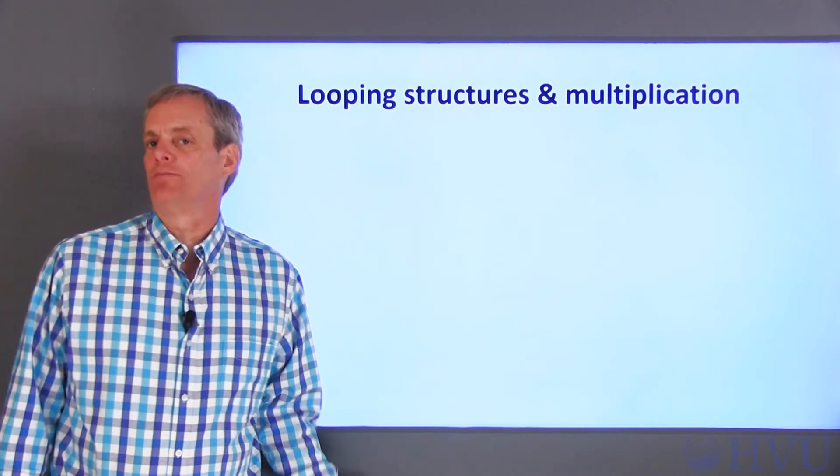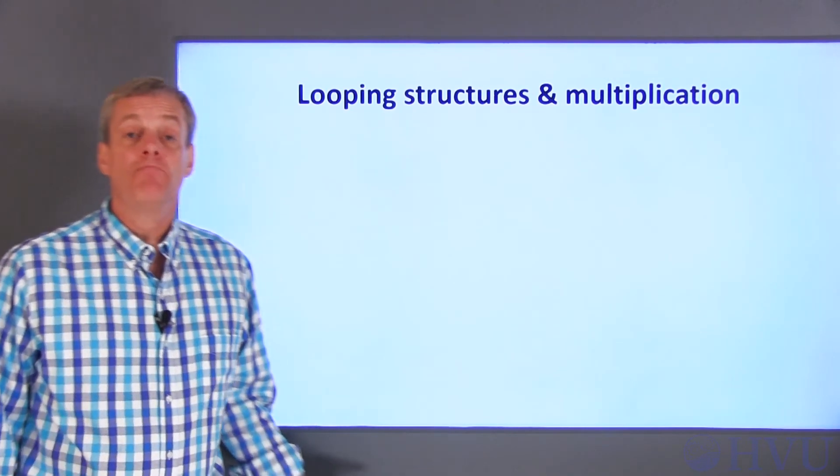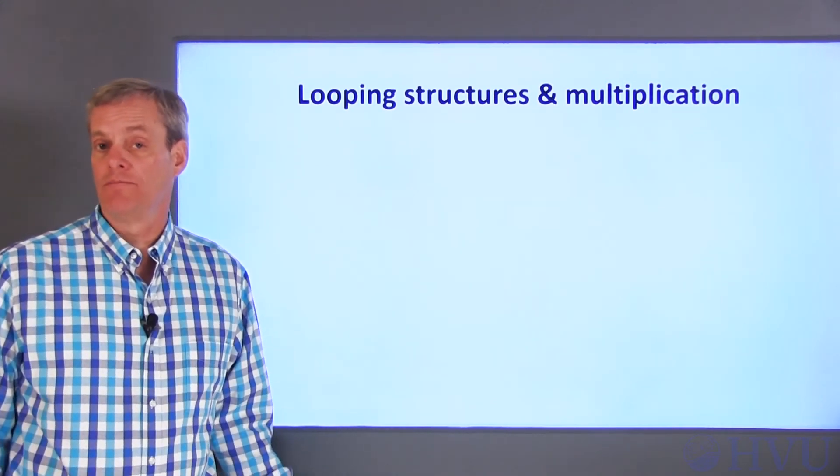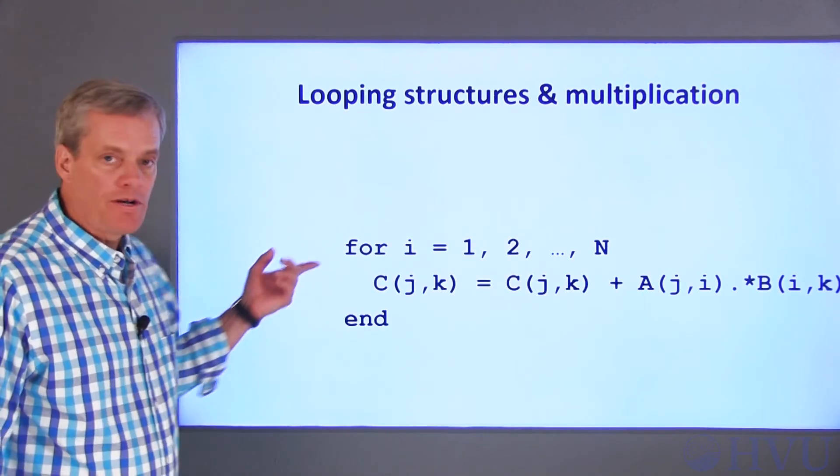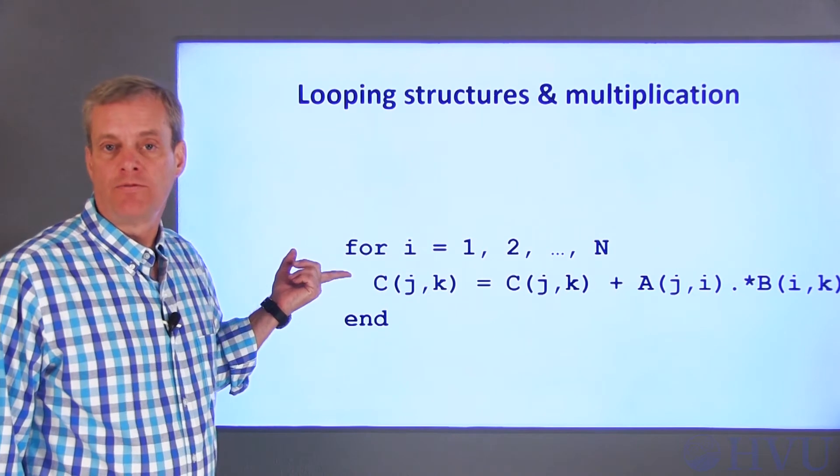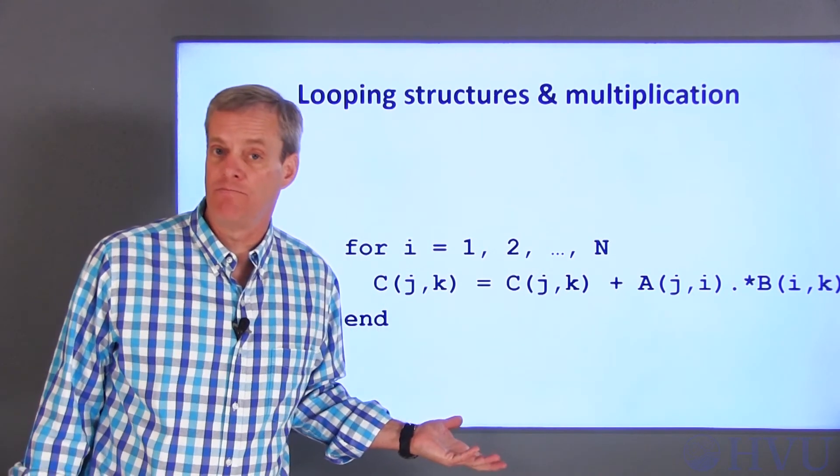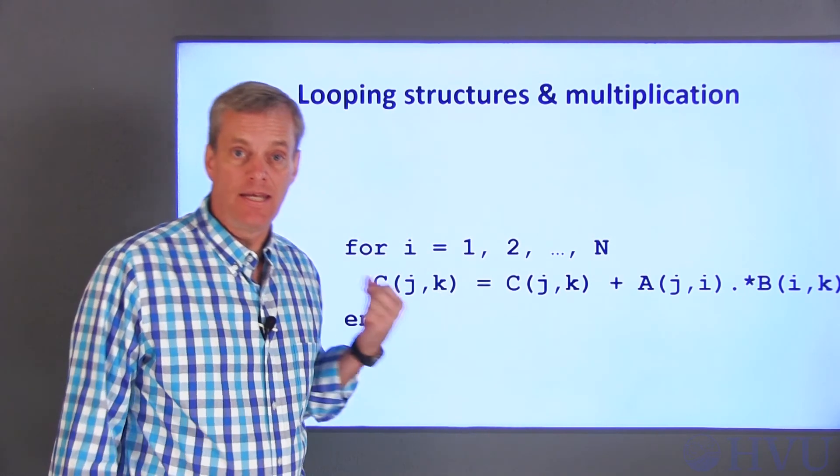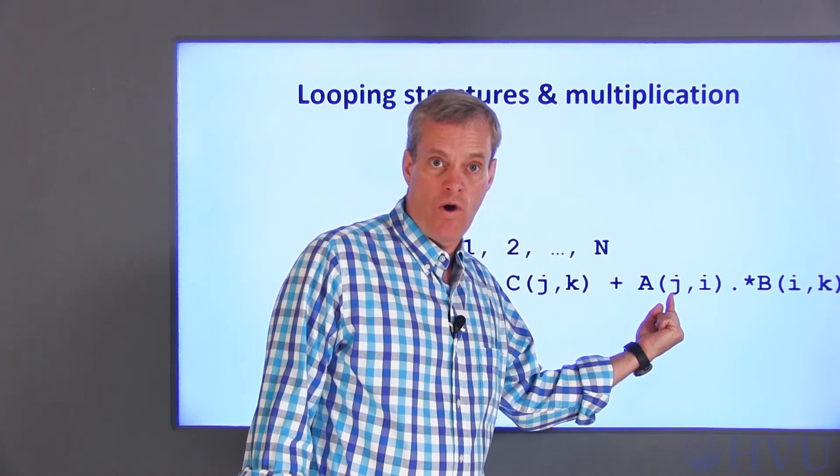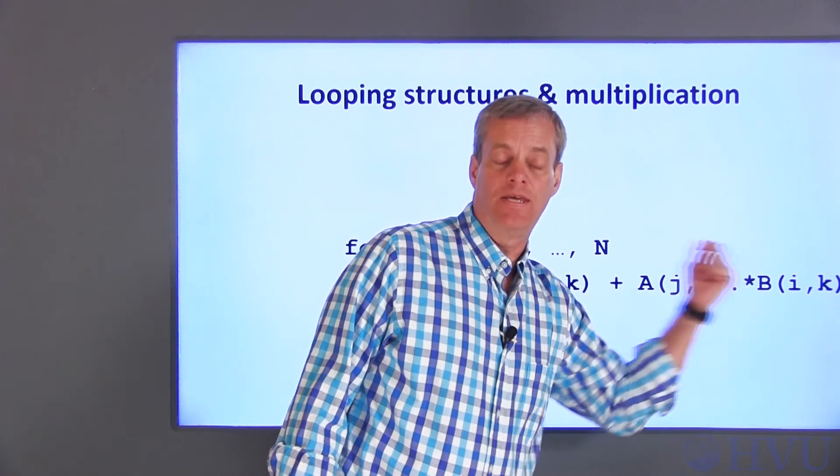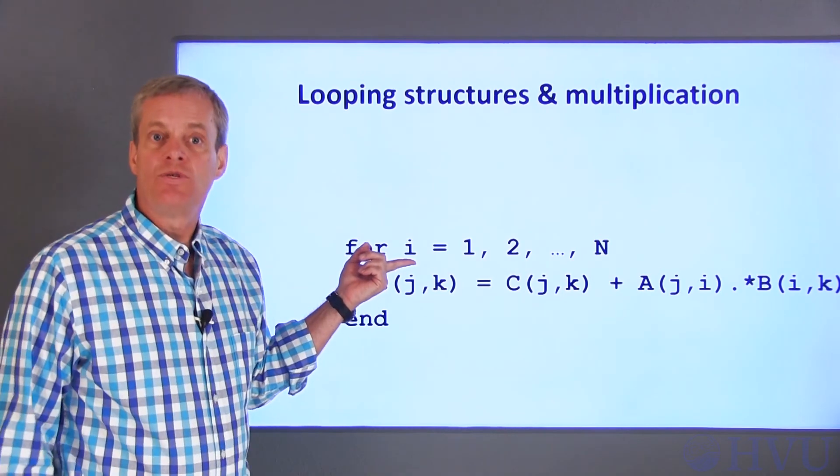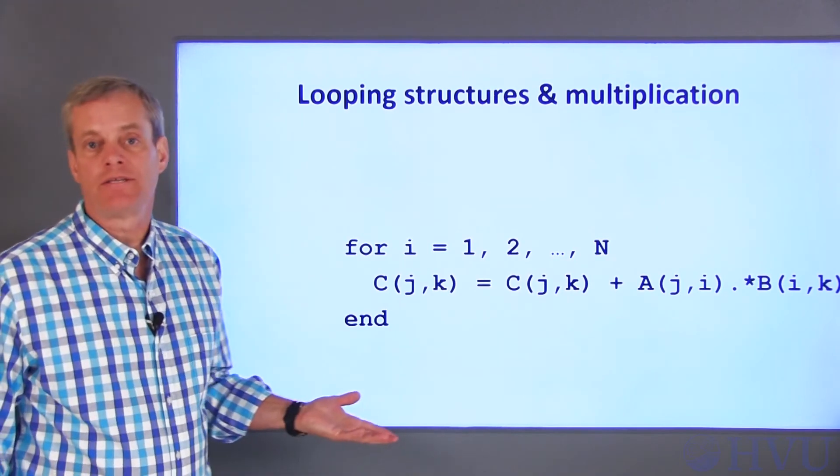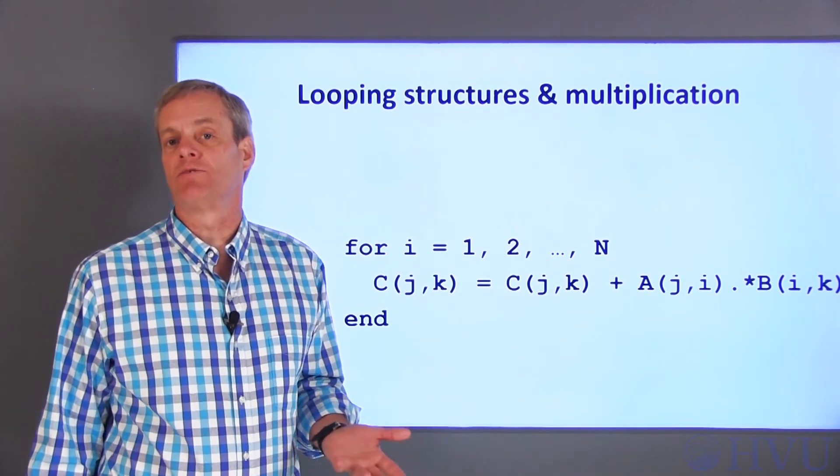Now I'll look at multiplying two matrices using looping structures. Multiplication of matrices involves creating an inner product for every combination of rows and columns of the matrix. The important part of this process is to perform the inner product between the appropriate rows of A and the columns of B. So the element in row J and column K of C is the sum of the products of the Jth row of A and the Kth column of B. The index I is used here to loop through the elements in these rows and columns. In order to do this process, the number of columns in A has to be the same as the number of rows in B.